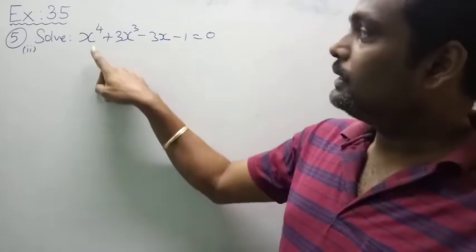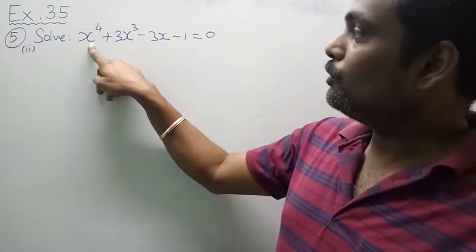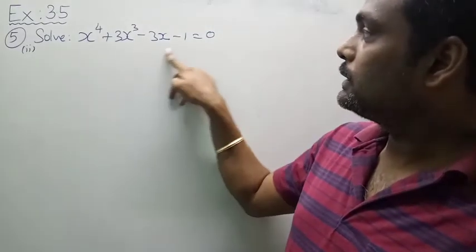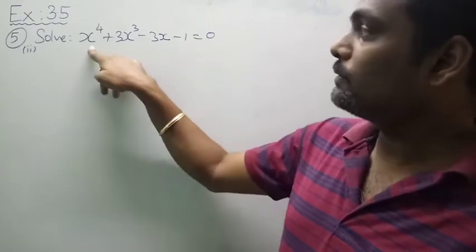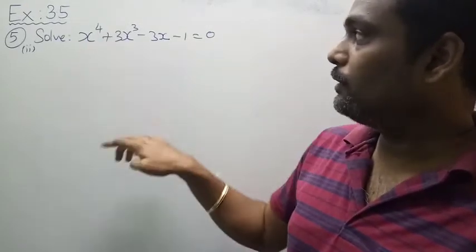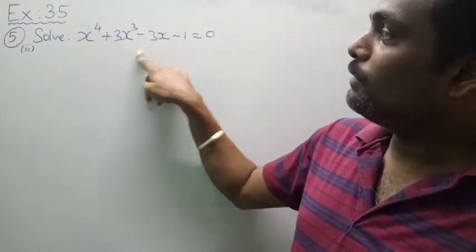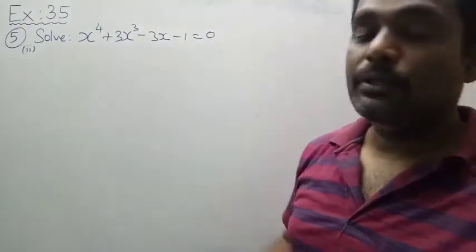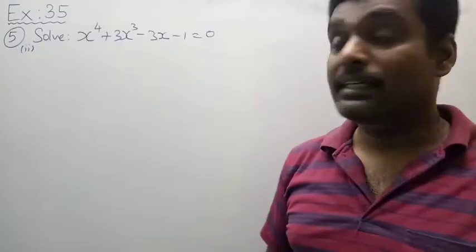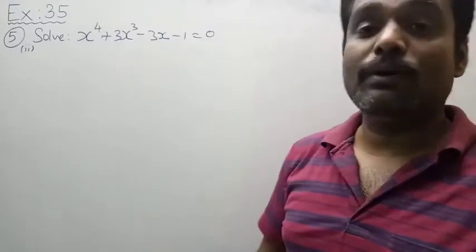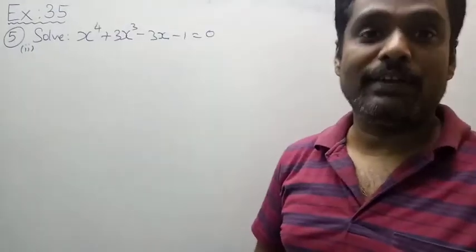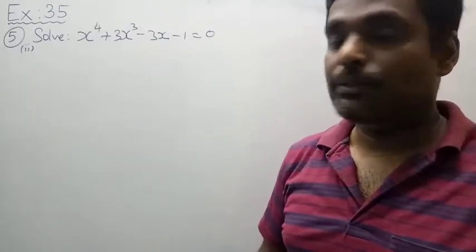Next, sum of even coefficients — that is 1 - 1 = 0. Sum of odd coefficients — 3 - 3 = 0. So in this case, x + 1 is also a factor.